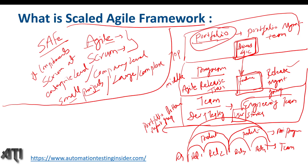Now we have some core values in the Scaled Agile Framework. The first one is Alignment. What does alignment mean? We need to understand the current state of the business, plan for upcoming projects, and set goals. All levels — top level, middle level, and bottom level — should be aligned to the goals set for the company.